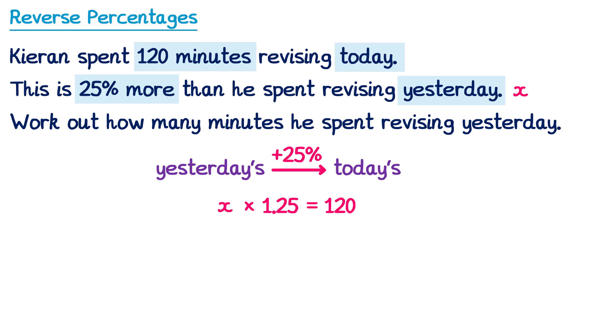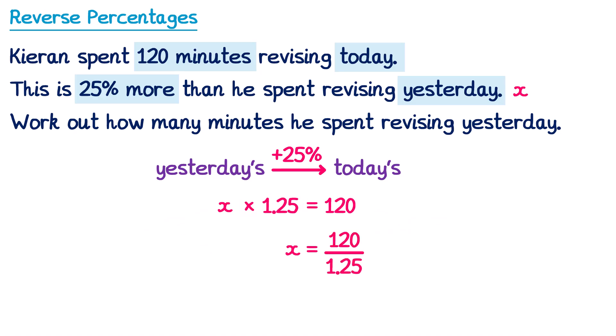We solve this in the same way. Since we're multiplying by 1.25 on the left, we divide both sides by 1.25. On the left that gives x equals, and on the right we do 120 divided by 1.25. Using a calculator, you get 96. So the amount of time he spent revising yesterday was 96 minutes.